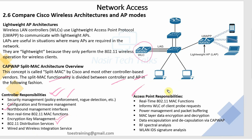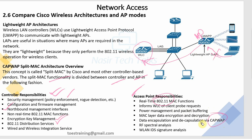Access Point responsibilities in the Split-MAC model include: real-time 802.11 MAC functions - MAC authentication and SSID authentication are handled at the AP level. If a client has an authentication problem, the AP communicates with the Wireless LAN Controller. Power management and packet buffering are local AP responsibilities. Data encryption and decryption are also performed by the AP locally.